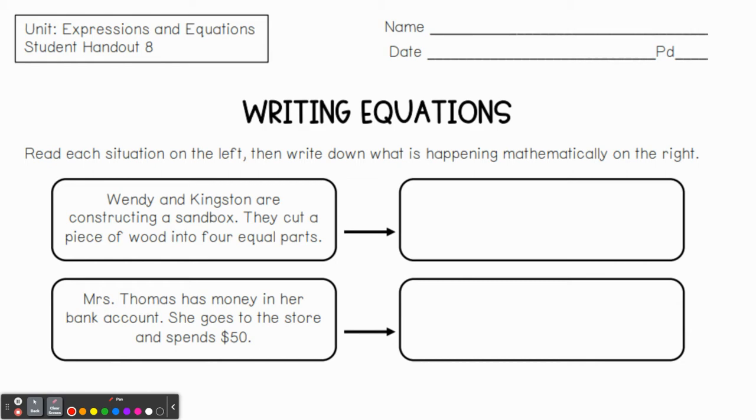We want to kind of say, hey, this is what's going on. So Wendy and Kingston are constructing a sandbox. They cut a piece of wood into four equal parts. So what's happening?